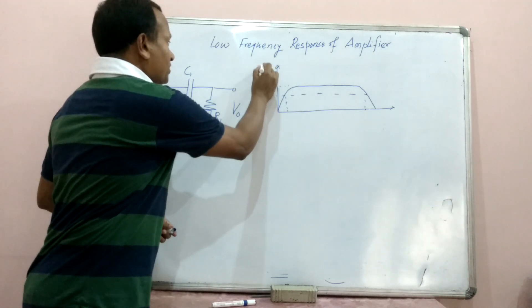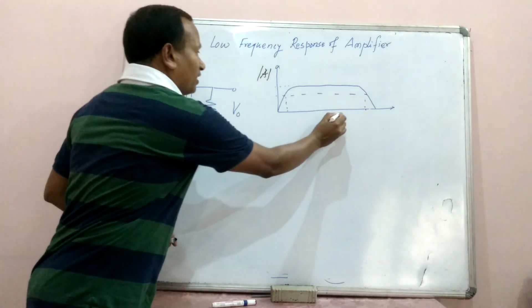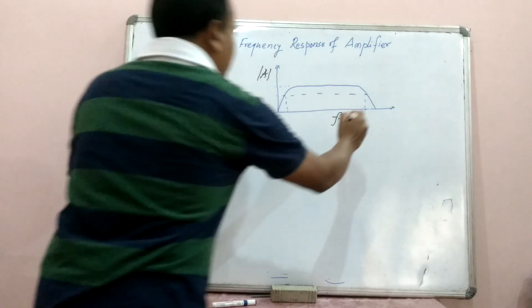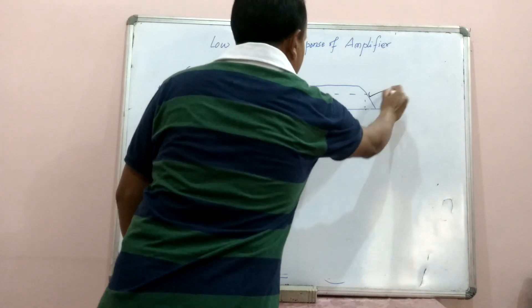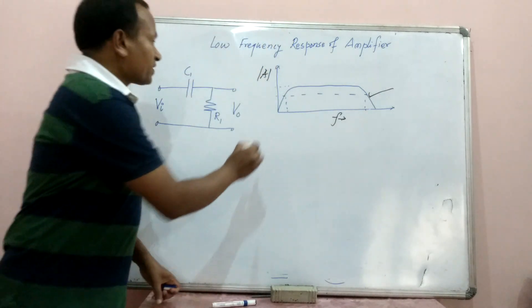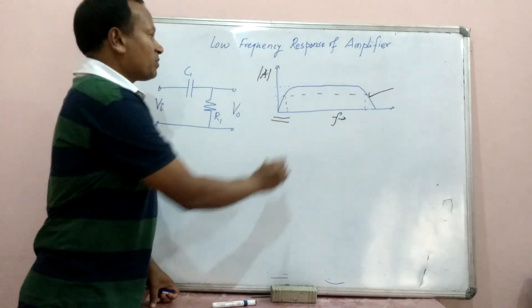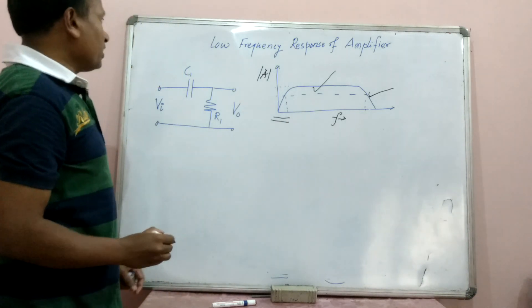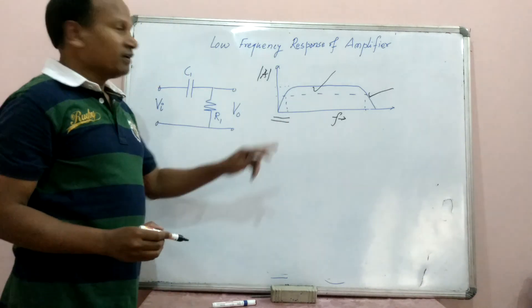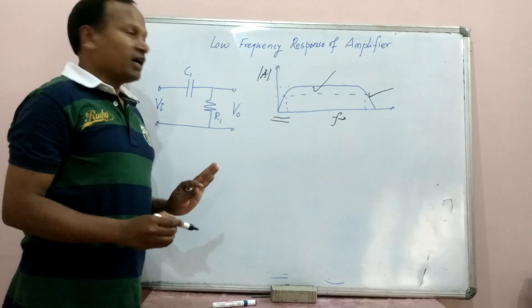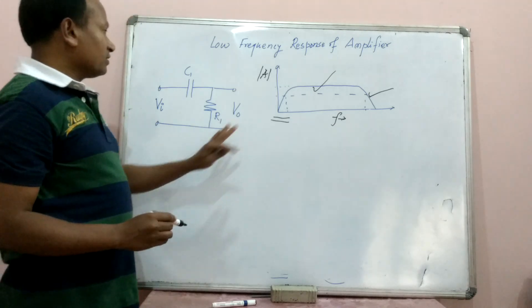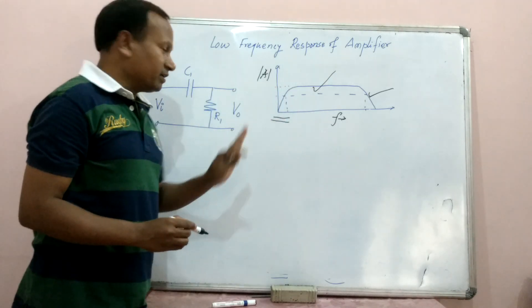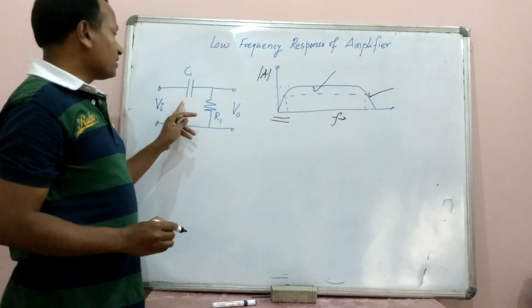This is the magnitude axis and this is the frequency scale. We can see that this particular portion is the high frequency response, this is the low frequency response, and this one is the middle frequency response. We are discussing here the low frequency response of an amplifier, and the equivalent circuit for the low frequency response of the amplifier is this one here.